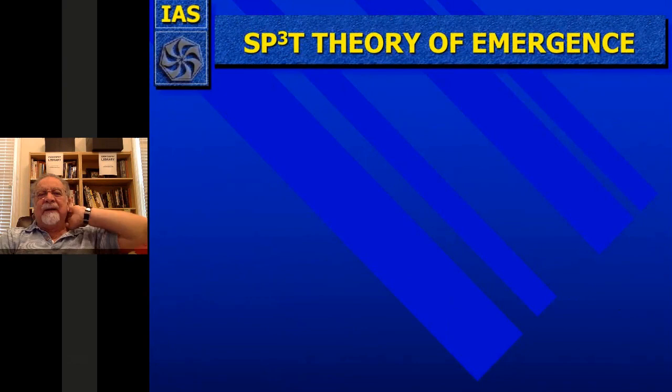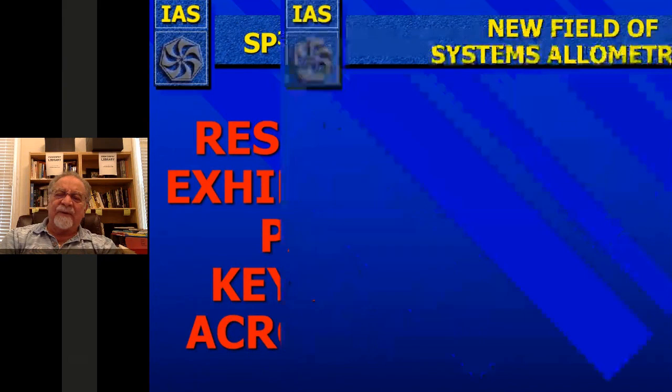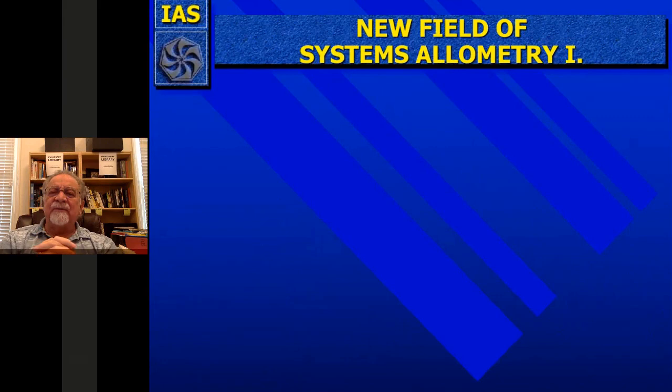The resulting levels exhibit consistent patterns in key parameters across all the levels. And in this I'm getting to the new field that also comes from systems processes theory — there are about a dozen of them — which is called systems allometry, which relates to bio-allometry.